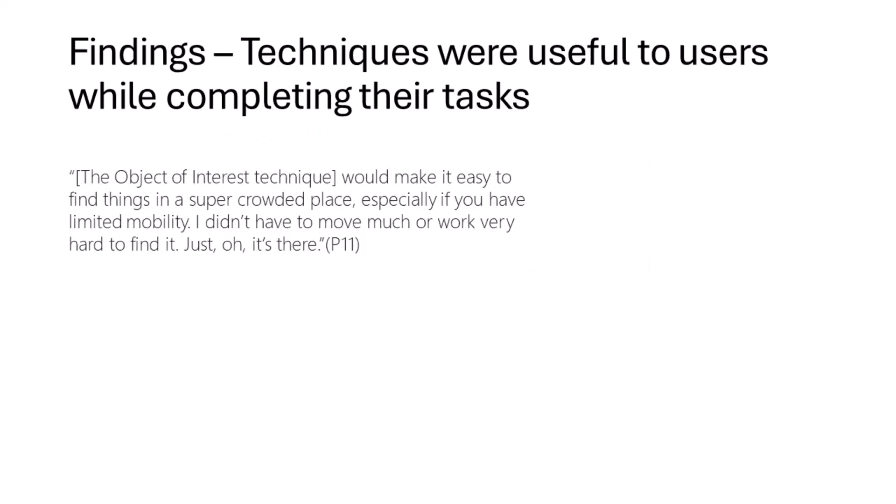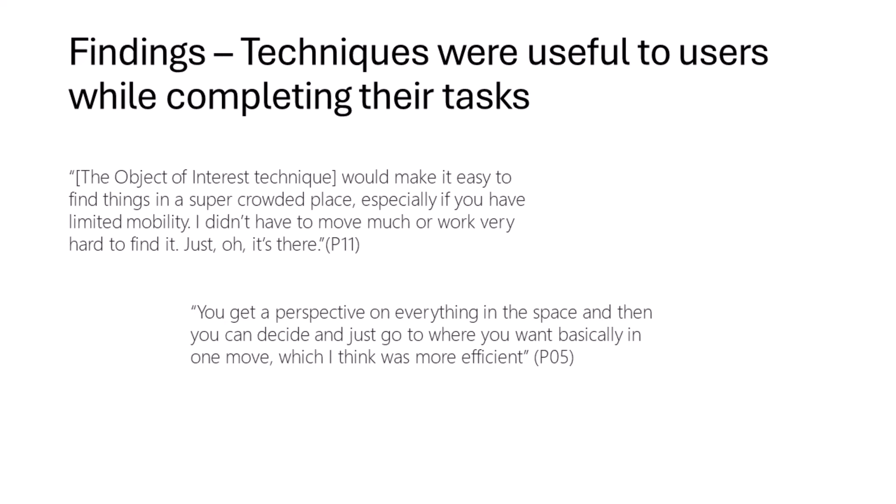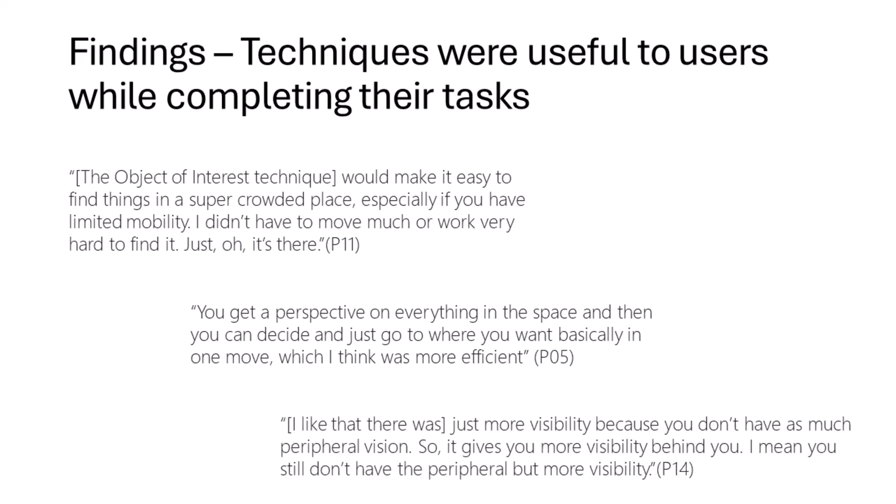From our study, we found that the techniques we created were useful to users while completing their various tasks. Participant 11 said the Object of Interest technique would make it easy to find things in a super crowded place, especially if you have limited mobility: "I didn't have to move much or work very hard to find it, just — oh, it's there." When discussing the benefits of Prosemic Snapping, Participant 5 said: "You get a perspective on everything in a space, and then you could decide and just go to where you want basically in one move, which I think was more efficient." And describing their interactions with the Rearview Mirror, Participant 14 said: "I like that there was just more visibility because you don't have as much peripheral vision, so it gives you more visibility behind you. I mean you still don't have the peripheral, but more visibility."